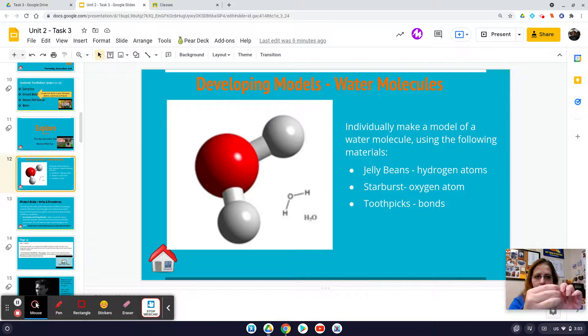If you drop it or throw it, obviously you don't get any more. One starburst, two jelly beans - that's all you get. I only bought enough for everybody to have one set. So I have my oxygen atom. Turn that into a circle.